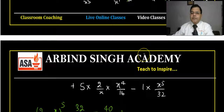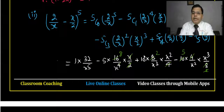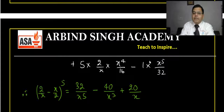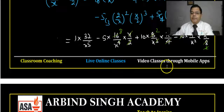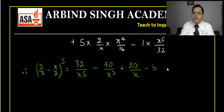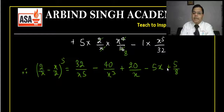After cancellation and simplification, the answer for 2 by x minus x by 2 to the power 5 is: 32 upon x to the power 5, minus 40 upon x cubed, plus 20 upon x, minus 5x, plus 5 by 8 x cubed, minus x to the power 5 by 32.